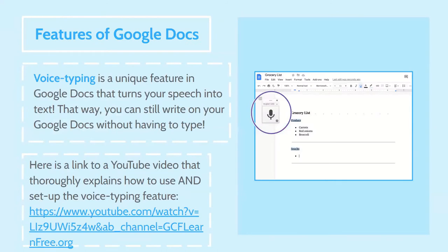Here are some of the features of Google Docs. First is voice typing, a unique feature to Google Docs that turns your speech into text, so you can still write on your Google Doc without having to type. There's a link to a YouTube video that thoroughly explains how to set up the voice typing feature. Essentially, it allows you to speak into your device's microphone, and then whatever words you're speaking, Google Docs will automatically turn that into words on the screen — all you have to do is speak.